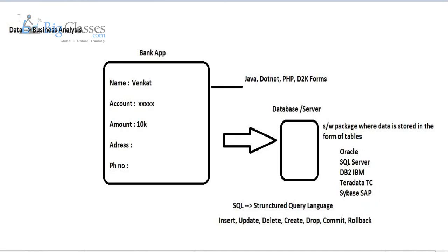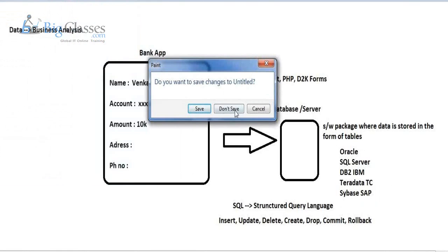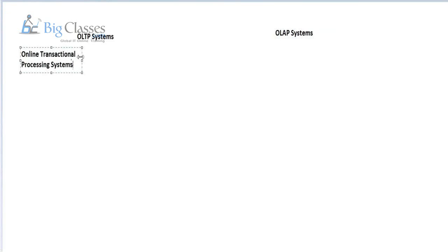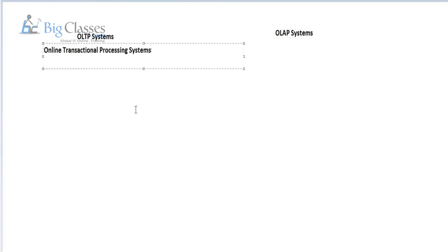When you talk about the data warehouse, before understanding what exactly a data warehouse is, we will try to understand two technologies: what is an OLTP system and what is an OLAP system. So these are two very important technologies to understand before getting into data warehousing. OLTP stands for Online Transaction Processing system, where all the transactions are processed.